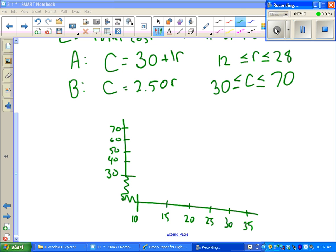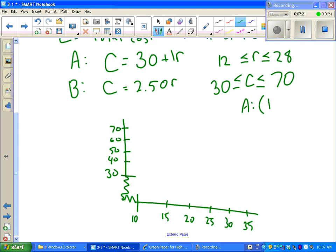We came up with some numbers for option A a little earlier. If I plug in my 12, I got 42. And when I plugged in my 28, I got 58. Those are good points because now I can use them to plot numbers on my graph and draw a line. And I'll do that with green.